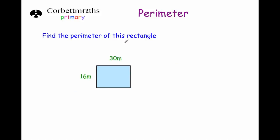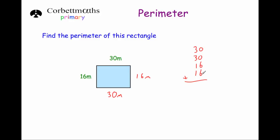Our next question says find the perimeter of this rectangle. Just be careful with the units — in our last question the total distance was 22 centimeters, but sometimes you might be given a different unit. This might be a field, for instance. We know the top of the rectangle is 30 meters, so the bottom is 30 meters, and the left hand side is 16 meters, meaning the right hand side is also 16 meters. So we do 30 plus 30 plus 16 plus 16, which gives us a total perimeter of 92 meters.